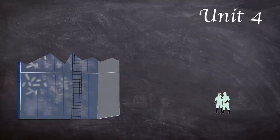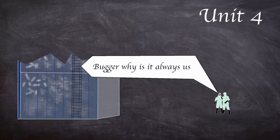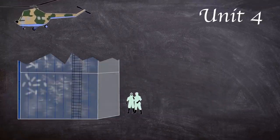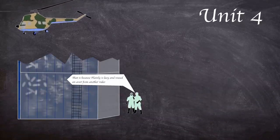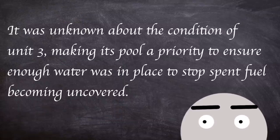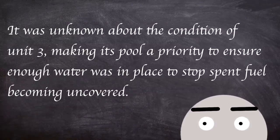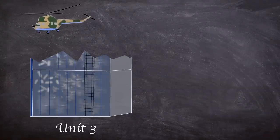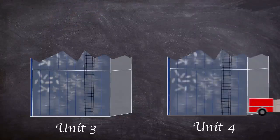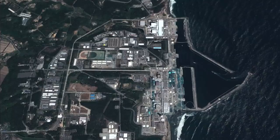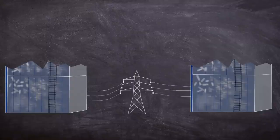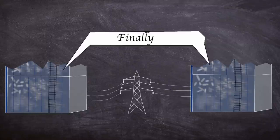A team needed to enter the reactor building of unit 4 to investigate the spent fuel pool status. However, upon entry they recorded radiation levels of 1,000 millisieverts an hour. After an aerial survey on the 16th, water levels were confirmed in unit 4's pool; however, it was unknown about unit 3, making its pool a priority to ensure enough water to stop spent fuel from becoming uncovered. Spraying started on the 17th with helicopters dropping around 30 tons of seawater. Later, fire hoses and water cannons were used to fill the pool. Additionally, on the 20th, unit 4 received water spray as well. Later into March, power was gradually restored to units 1 to 4, with units 5 and 6 receiving power from the only working air-cooled generator. Units 3 and 4 were the last to receive power after being completely cut off for more than two weeks.